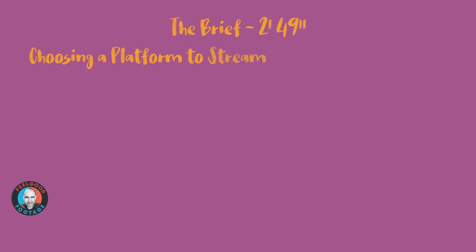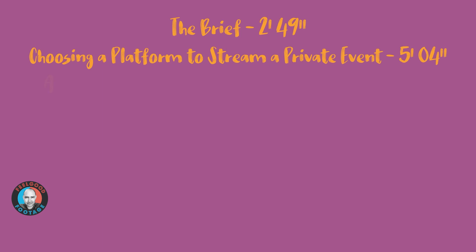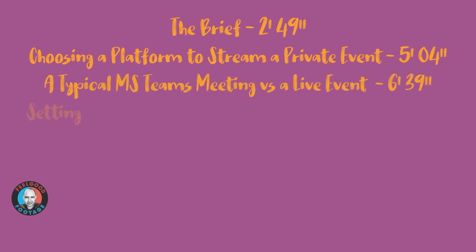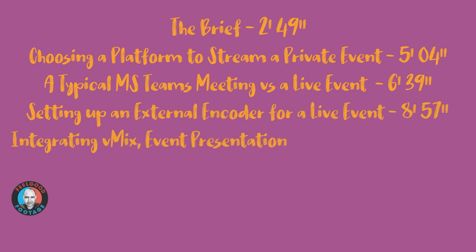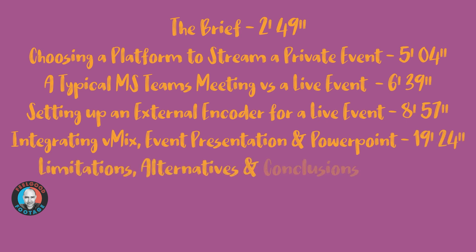The sections are: the brief; choosing a platform to stream a private event; a typical Microsoft Teams meeting versus a live event; setting up an external encoder for a live event; integrating vMix, event presentation and PowerPoint; and finally limitations, alternatives and conclusions.